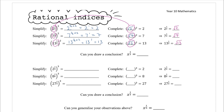So if we generalize: two to the power of a half is the square root of two, seven to the power of a half is the square root of seven, thirteen to the power of a half is the square root of thirteen, and therefore x to the power of a half must be the square root of x.